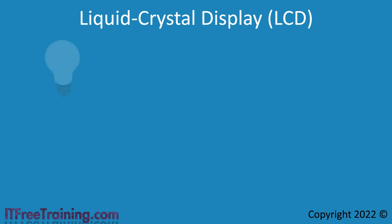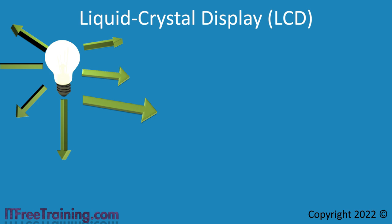An LCD screen essentially starts with a light source at the back of the monitor creating light. The light goes off in every direction and is distributed in different waveforms. A filter is placed in front of the light source which blocks some of the waves but not all. What is going through the filter is light of all the same wavelength.